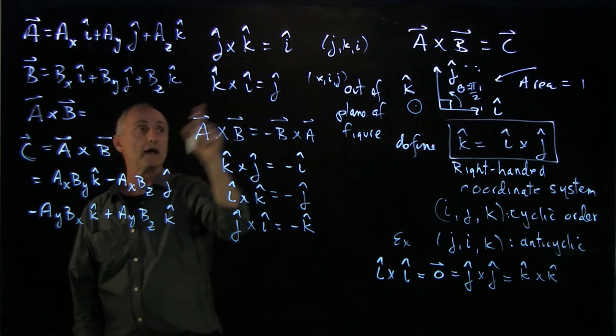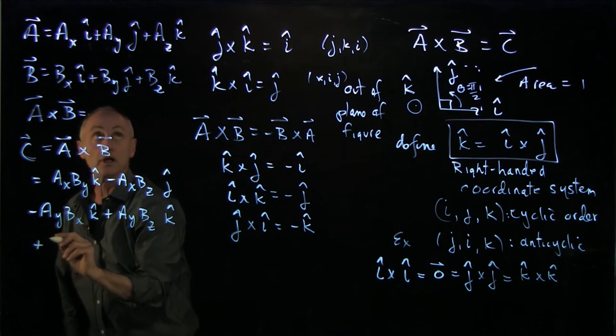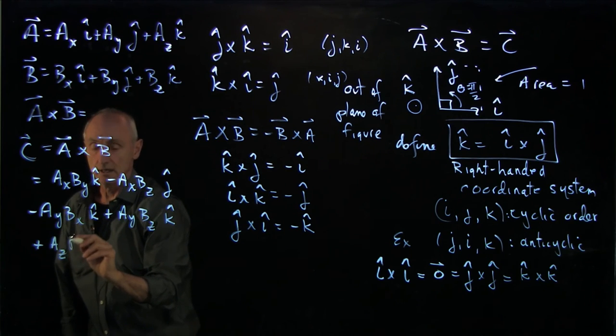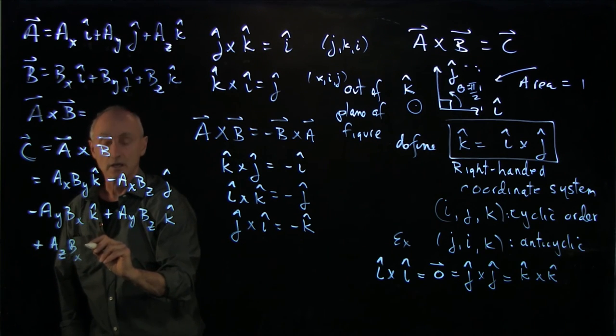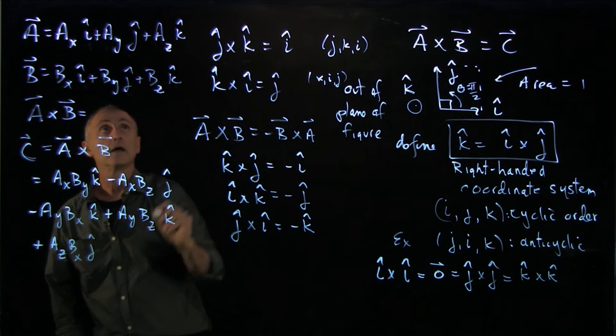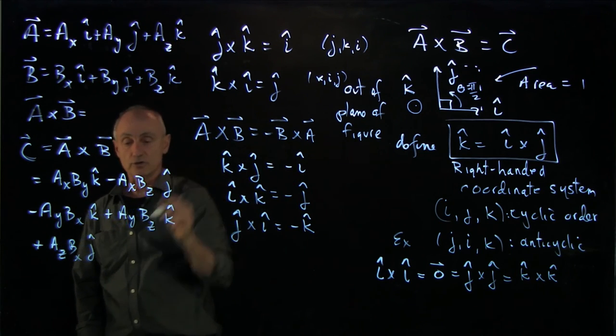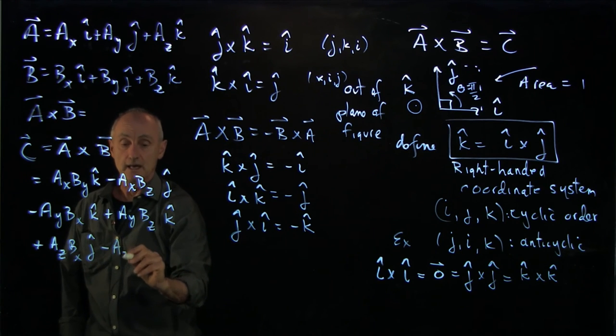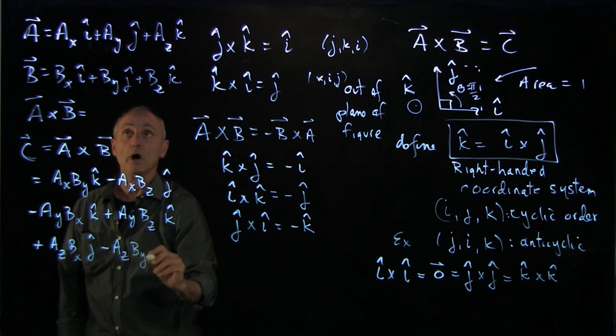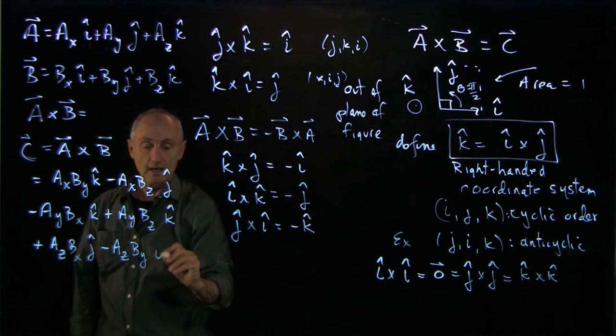k hat cross i hat. That's cyclic. So that's plus az bx j hat. k hat cross j hat. That's anti-cyclic. So there's a minus i hat. So it's minus az by i hat.